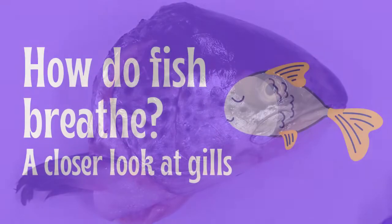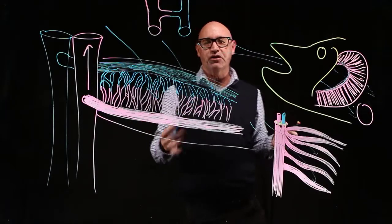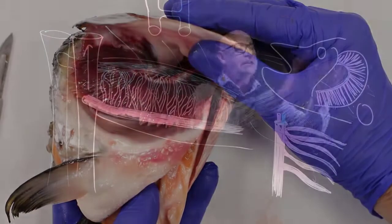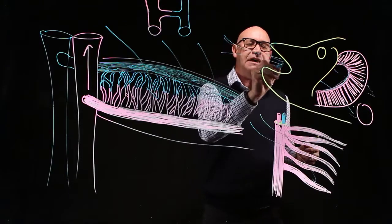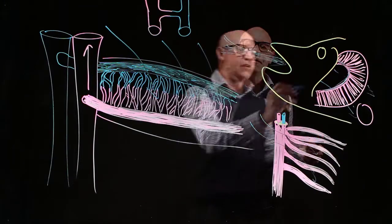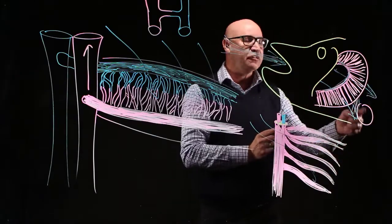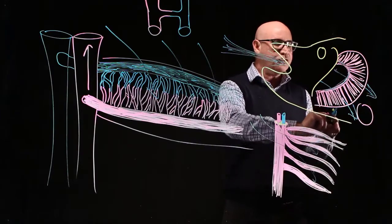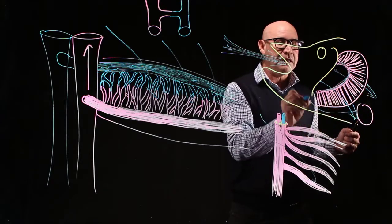How do fish breathe? Let's have a closer look at gills. We've got our gills located behind the head of the fish — mouth open, water's coming in through the mouth and it washes over the gills. The heart of the fish is located just behind the gills. It's a two-chamber heart and it's pumping deoxygenated blood that's come back from the body up into the gills.